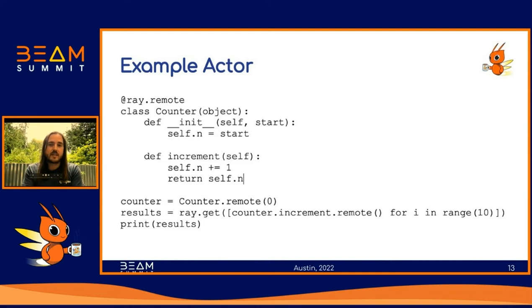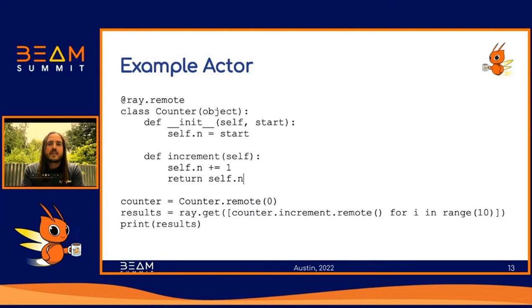Since Ray automatically synchronizes asynchronous updates to the counter's shared state, this program is resilient to race conditions and will always print out an ordered list of values from 1 to 10.